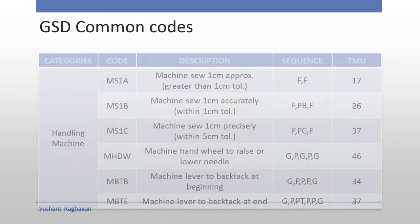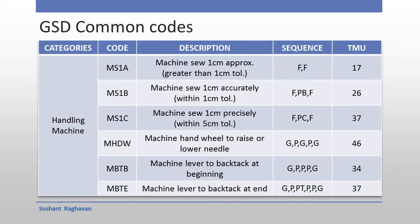GHD Common Codes — Handling Machine category: MS1A — Machine sew 1 cm approximately; MS1B — Machine sew 1 cm precisely within 5 cm; MS1C — Machine sew 1 cm precisely within 5 cm (higher precision); MSDW — Machine hand wheel to raise or lower needle; MBTB — Machine lever to back tack at beginning; MBTE — Machine lever to back tack at end.